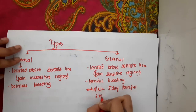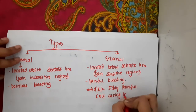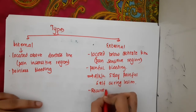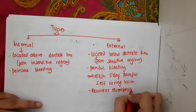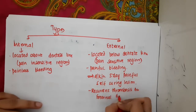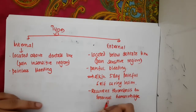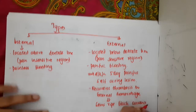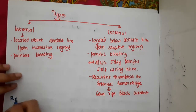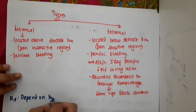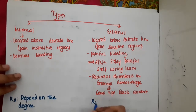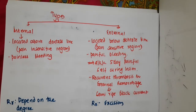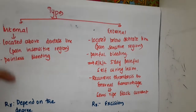External hemorrhoids are also called a 5-day painful self-limiting condition because after 5 days the hemorrhoids resolve by themselves. When external hemorrhoids undergo recurrent thrombosis, this results in a semi-ripe black currant appearance. Treatment of internal hemorrhoids depends on degree, whereas treatment of external hemorrhoids is by excision.